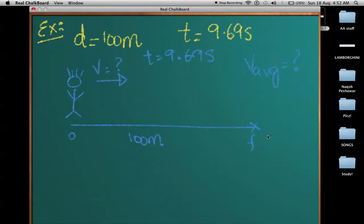The formula is simply: average velocity - always remember that this is average velocity - is displacement divided by time. The displacement is 100, the time is 9.69. So 100 divided by 9.69, you can use your calculators, and you will get 10.32 meters per second.